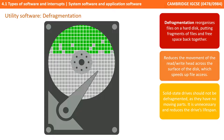Defragmentation utilities reorganize files on a hard disk. It puts the fragments of files back together and collects free space, reducing the movement of the read-write head across the surface of disks, which speeds up access to files. Solid-state drives should not be defragmented — it's unnecessary because they have no moving parts and can already access files very quickly, and defragmenting actually reduces their lifespan due to the way those devices work.